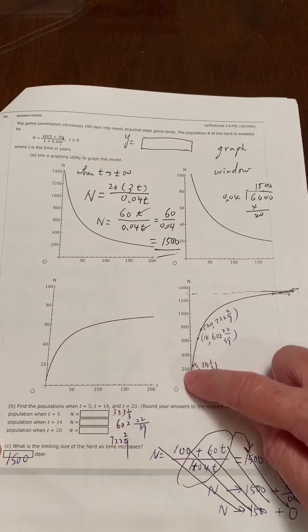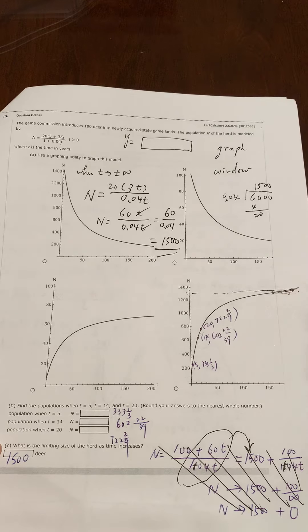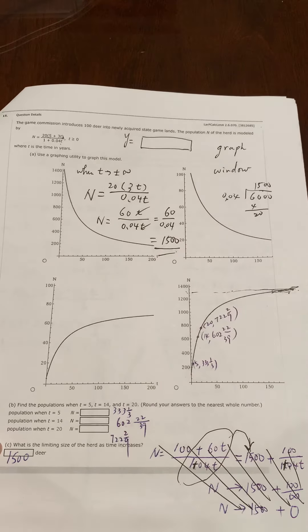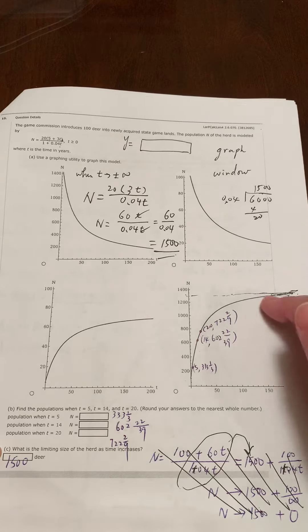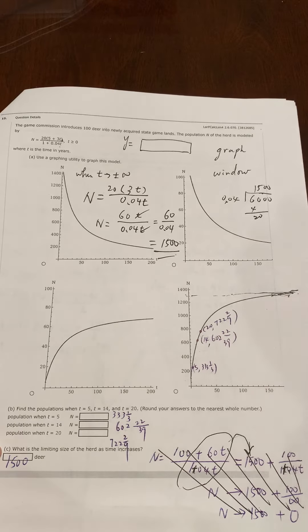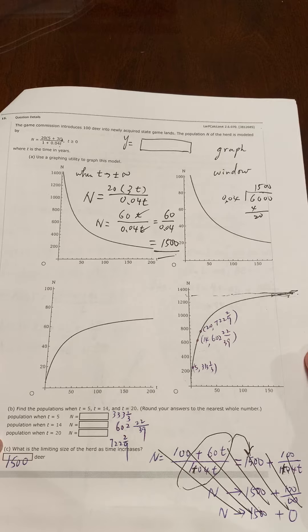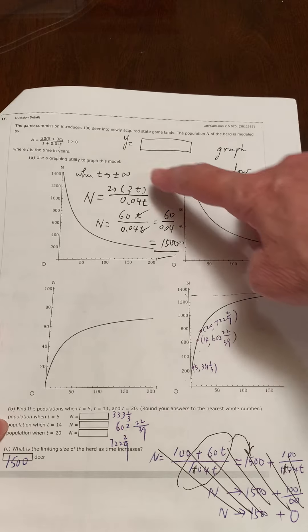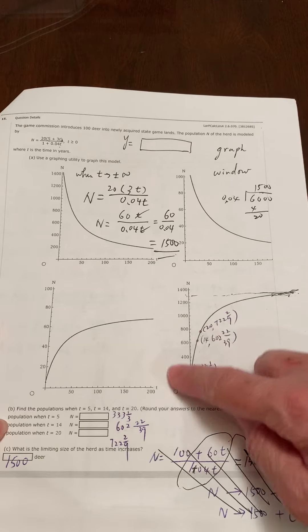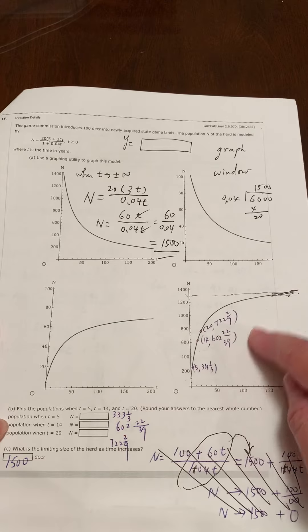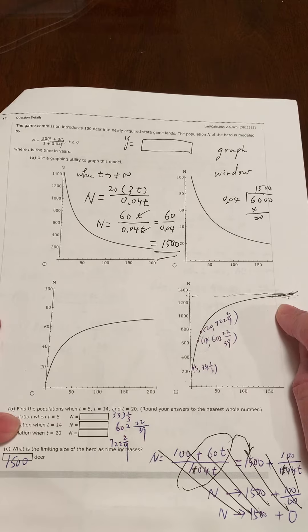Now part C is talking about is there any maximum for this one. Do you believe this graph keeps going up forever, or is there a horizontal asymptote to become a boundary to limit the graph from keeping going up? Actually, yes.